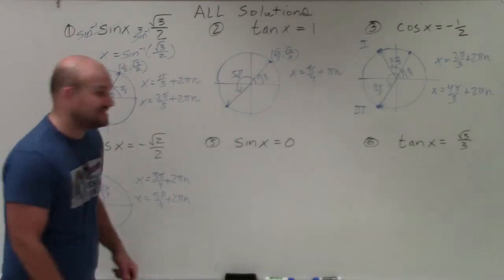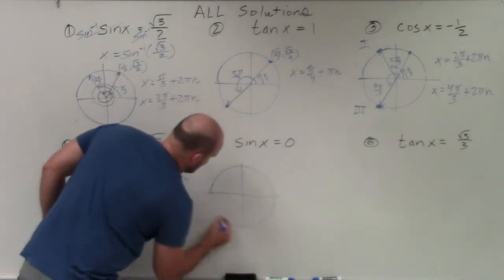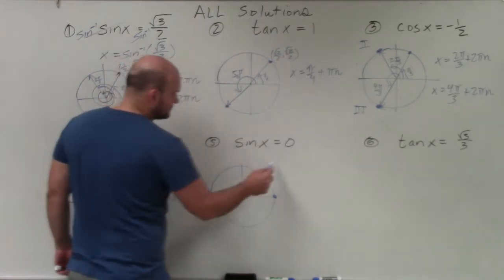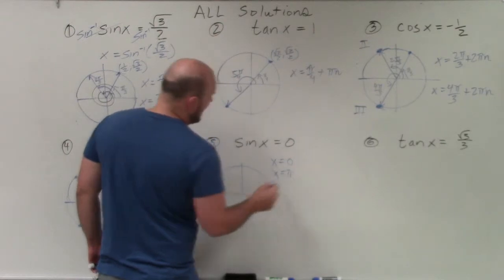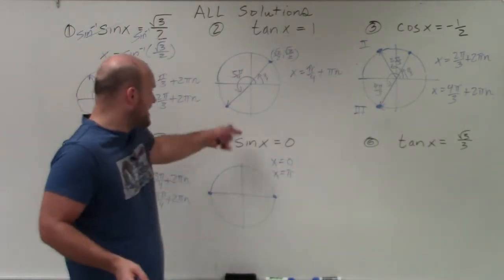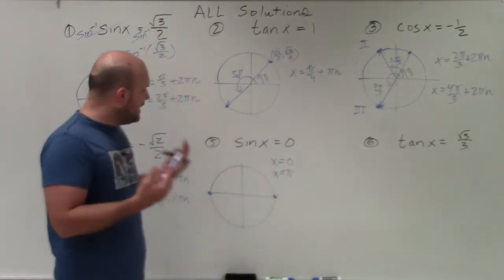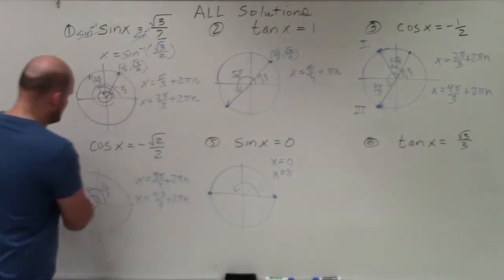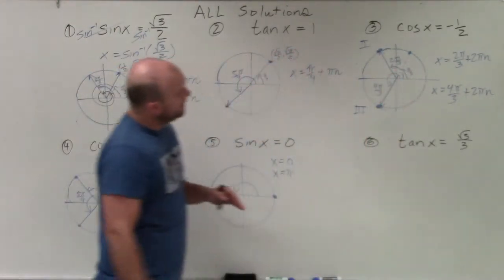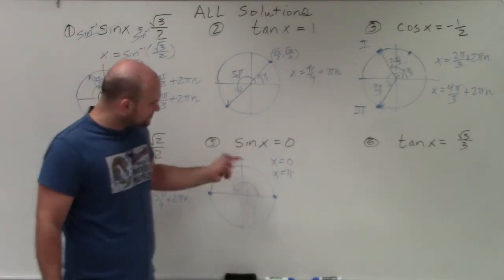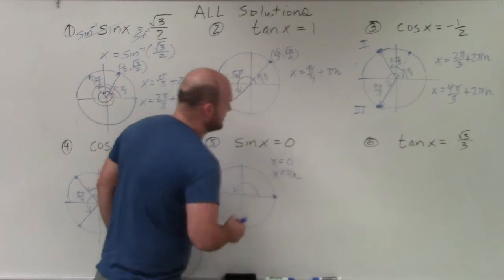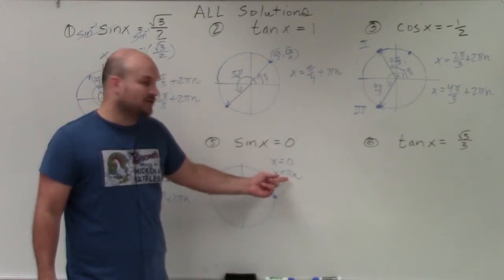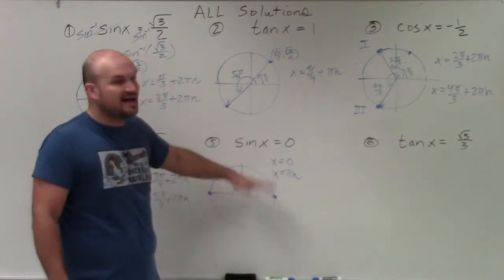Now let's solve sine of x equals 0. Since sine represents the y-coordinate, it equals 0 at two points on the unit circle: x equals 0 and x equals pi. Notice these are a distance of pi apart. So rather than adding 2 pi n, I can just add pi n. If n equals 0, the angle is 0; if n equals 1, the angle is pi. So x equals pi n satisfies all solutions.